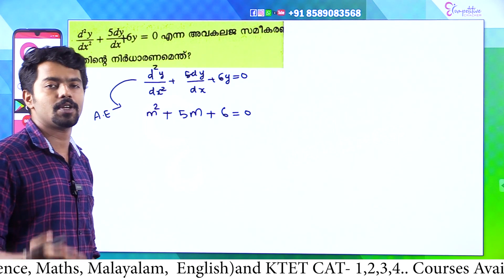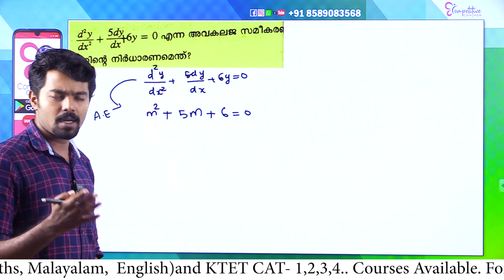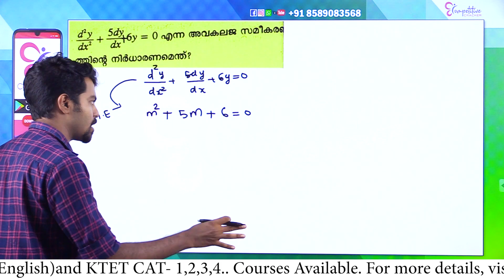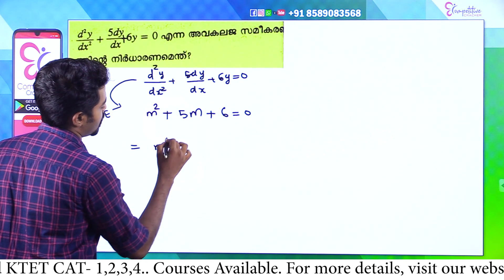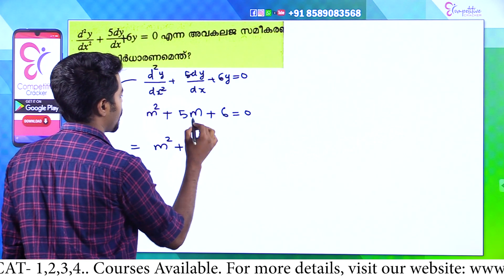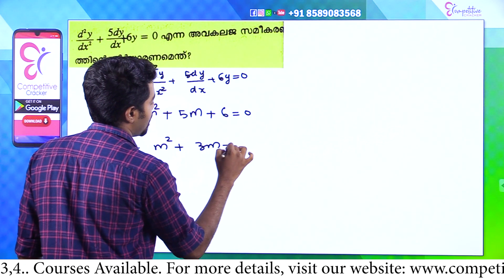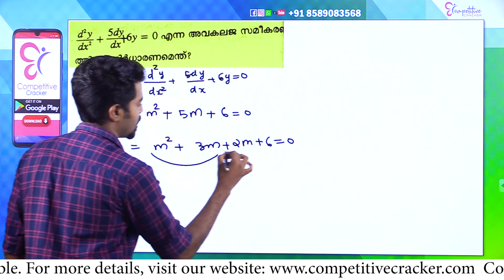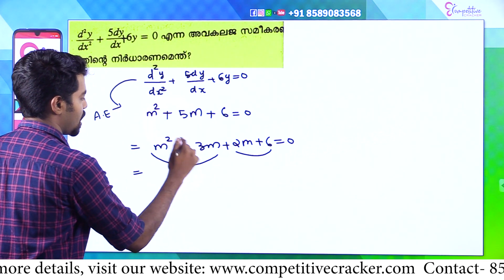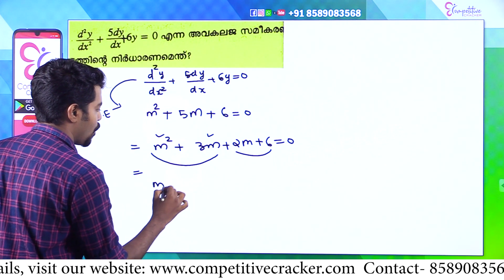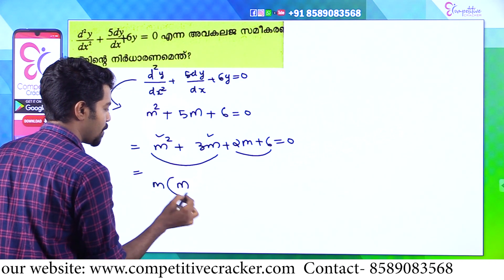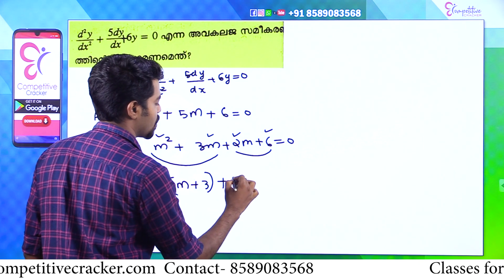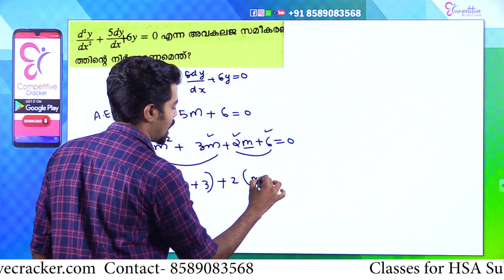We have to look at the solution. I will split the method of 5m: 3m plus 2m. So m² plus 3m plus 2m plus 6 is equal to 0. We will split the method: m² plus 3m — here m is common, that is m(m plus 3). Then 2 is common: 2(m plus 3) equals 0. So (m plus 2)(m plus 3) equals 0. That gives m equal to minus 2 and m equal to minus 3.